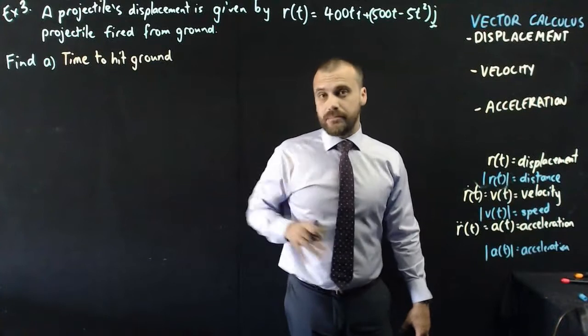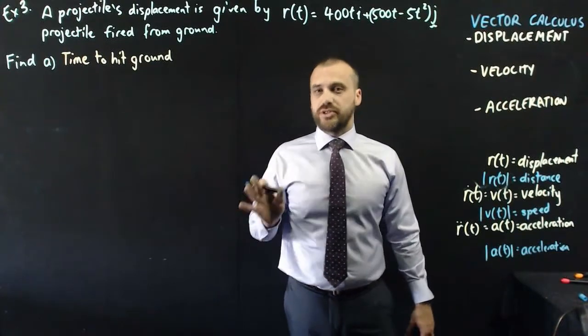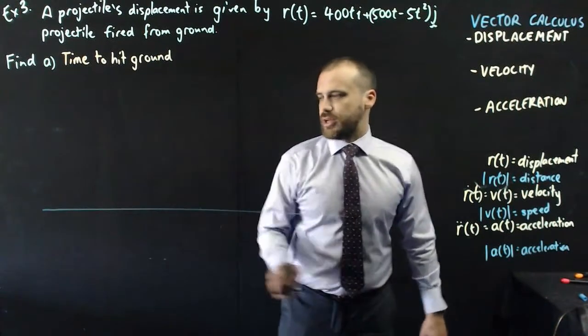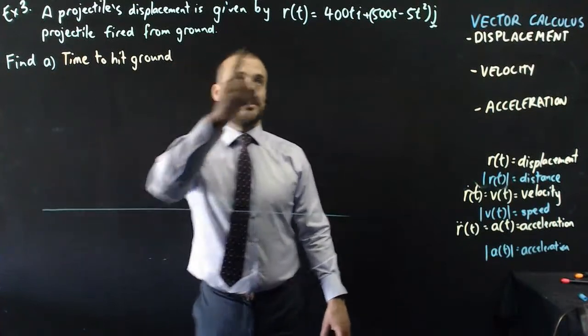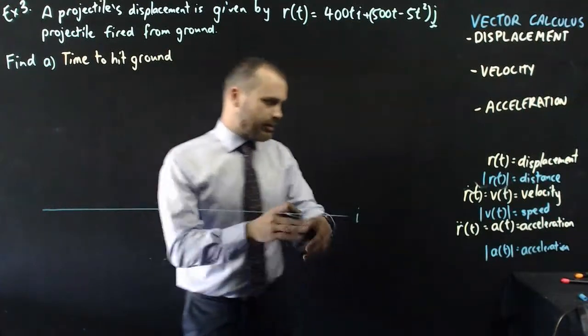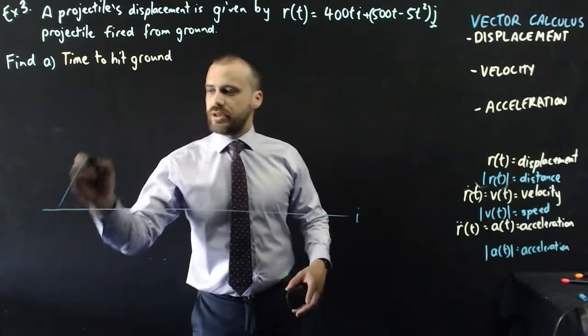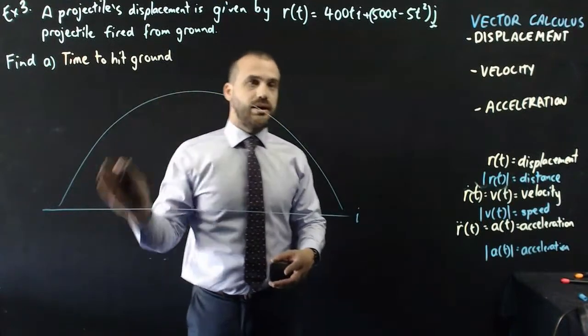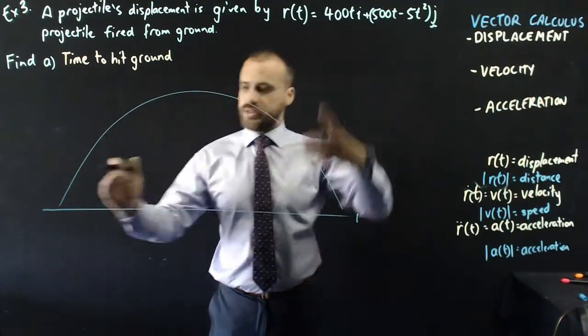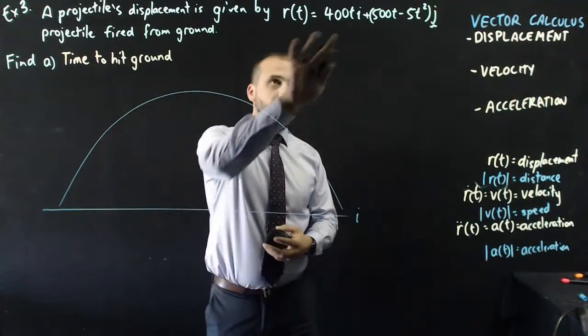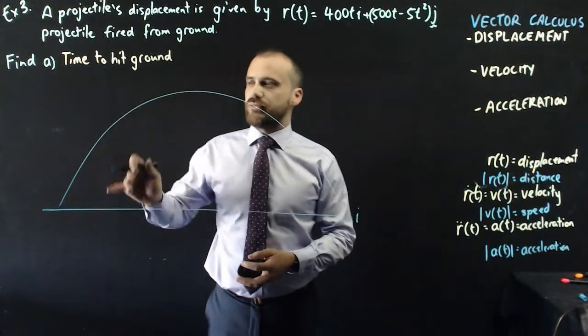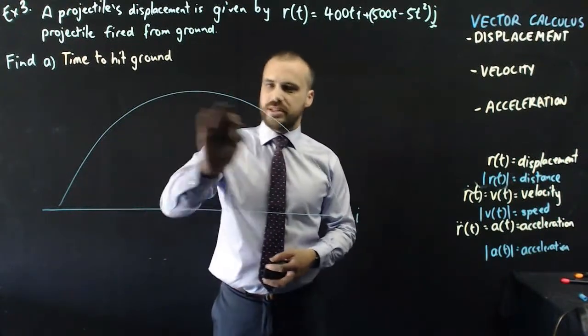All right, so this question's really the main event when it comes to vector calculus. Projectiles. Well, lots of questions have projectiles in them. So, it's a question that's a little bit like this. Flat ground here, and the displacement of the object, it's moving across, so that's our flat ground i component, and it's sailing through the air and hitting the ground at some point.